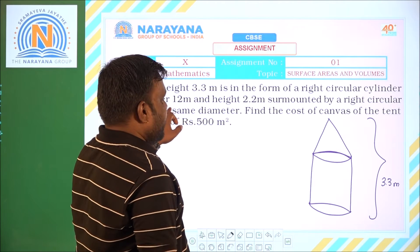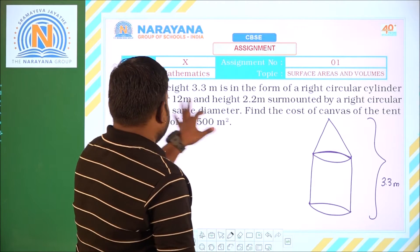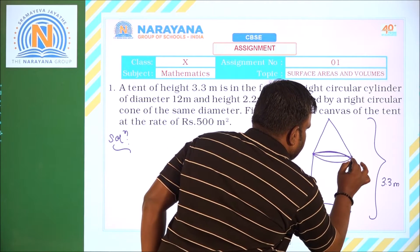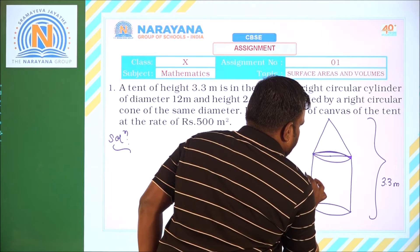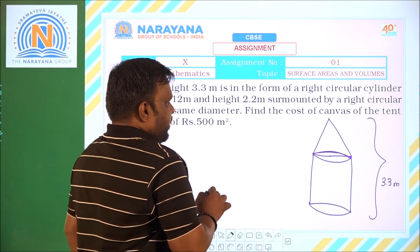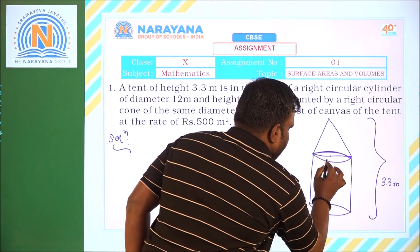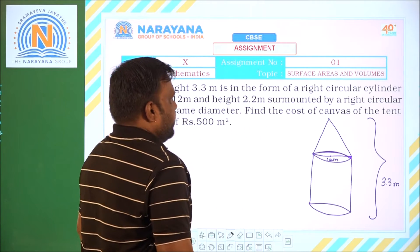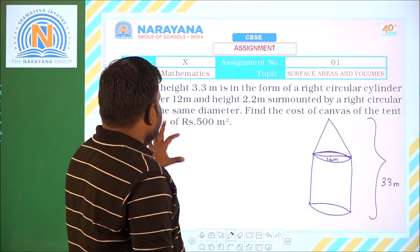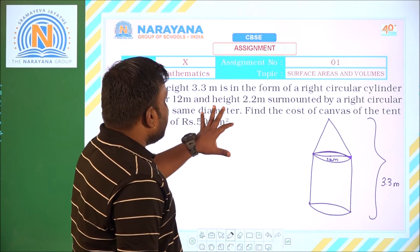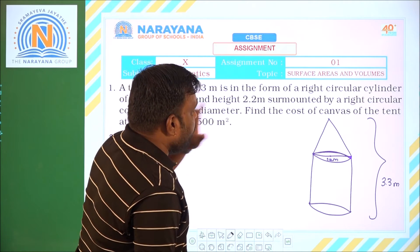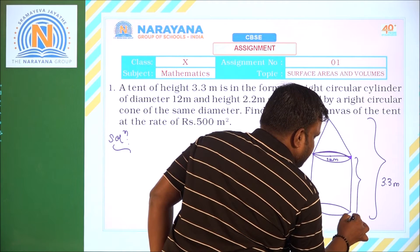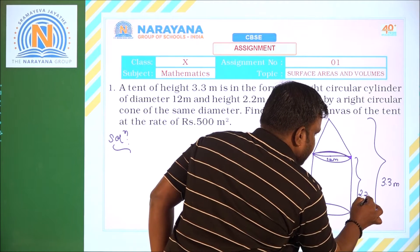The diameter of the complete part — that is the cylindrical part — is 12 meters. So if the diameter is 12 meters, the radius will be 6. The cylindrical part height, if you see here, is 2.2 meters.